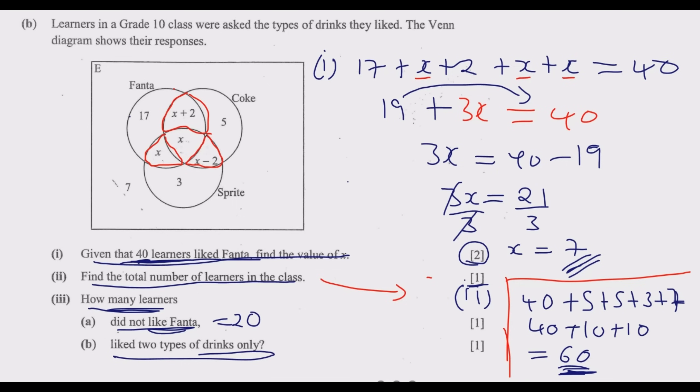Since x is 7, it will be 7 + 2, so this becomes 9 in this set. Then here it will be 7 - 2 which is 5. Then here this is 7 because x is 7. So this now becomes 9 + 5 + 7 which equals 21.